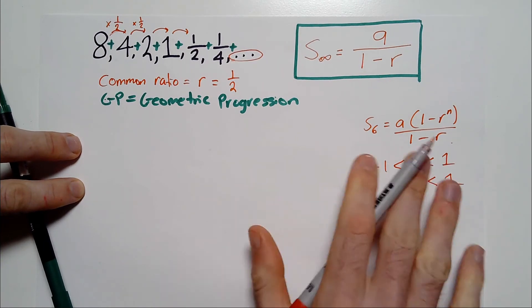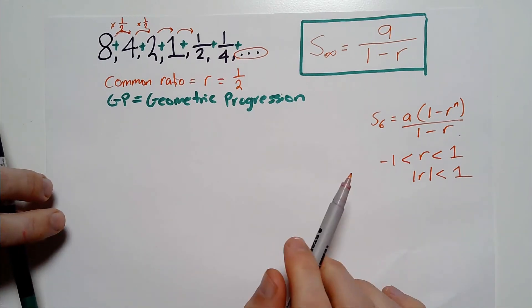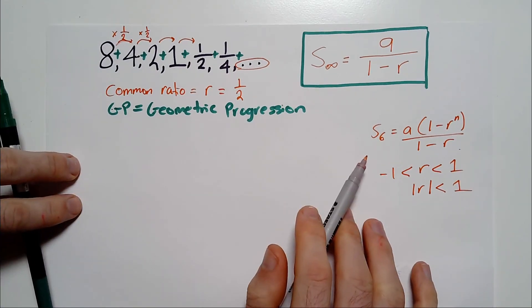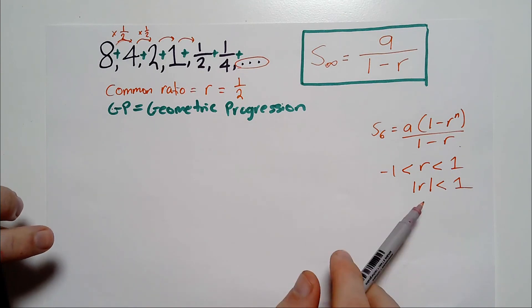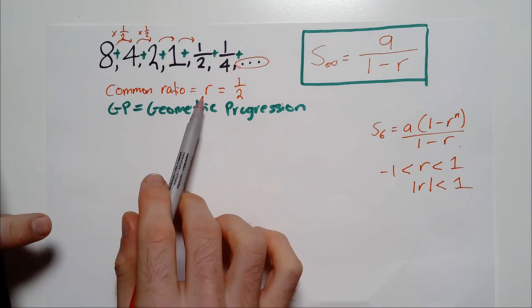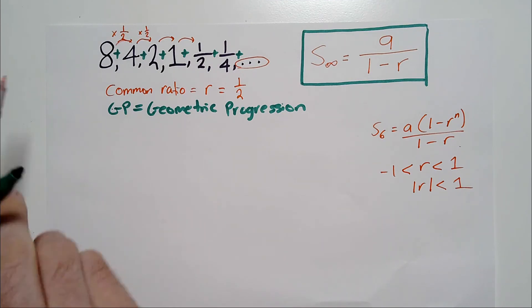Another way of writing that is that the absolute value of R is less than 1, because that includes negative 1s. So that's the formula you would apply if it didn't go forever. However, you can watch our other videos on the sums of GPs for more on that. Now, the last thing to mention, which I've just alluded to here, is the fact that the ratio here is between negative 1. This is very important.